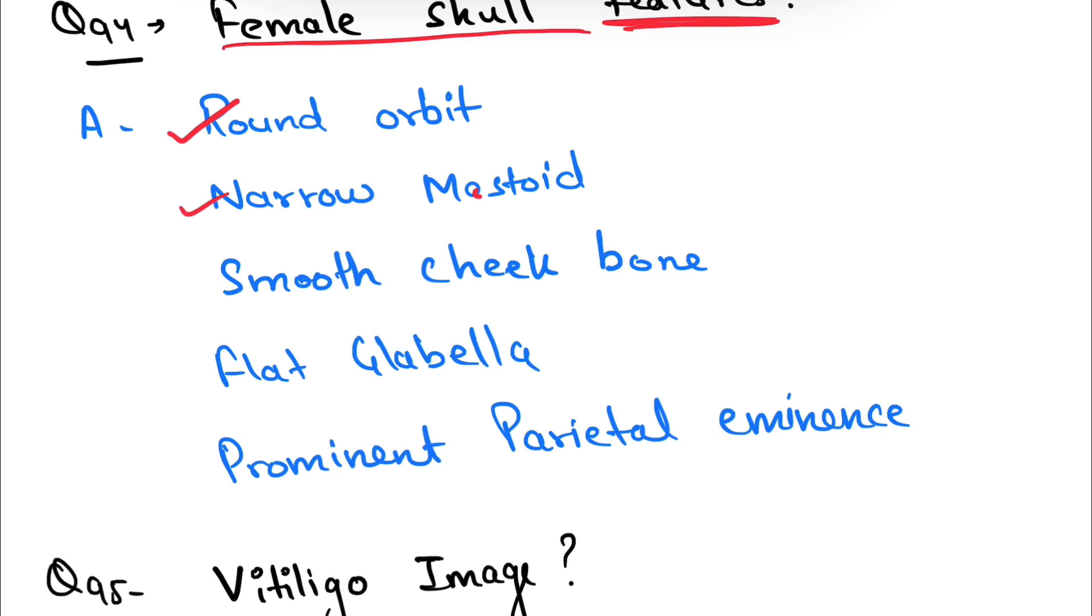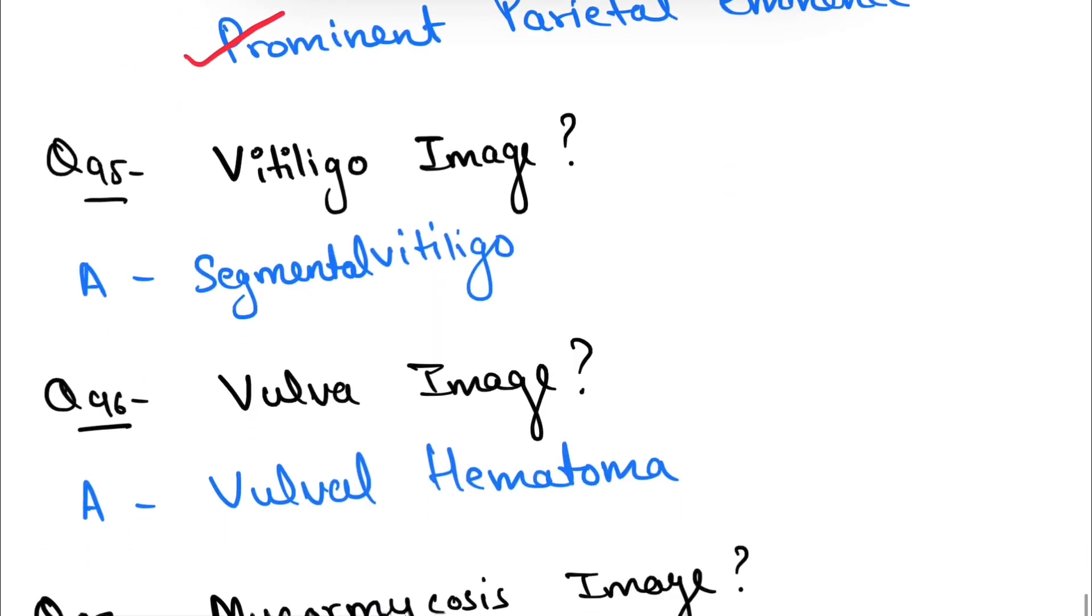narrow mastoid, smooth cheekbone, flat glabella, and prominent parietal eminence. Question number 95: vitiligo image was given and they asked